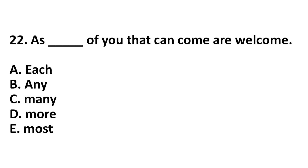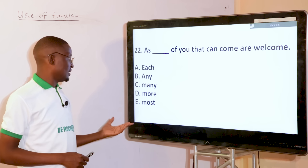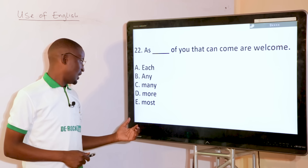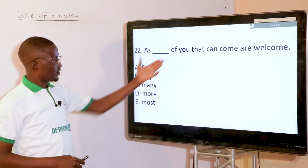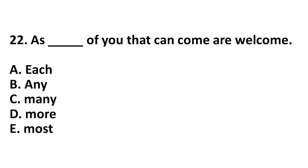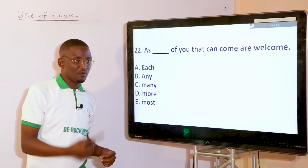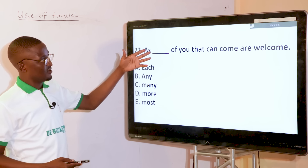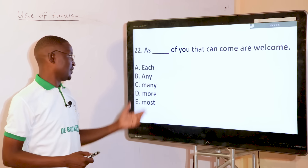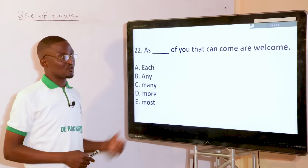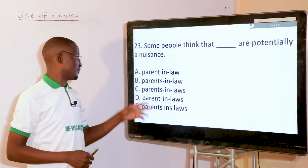Dash of you that can come are welcome. Options: as each, as any, as many, as more, as most. We are talking about a mass count of people, so the answer is as many — as many of you that can come are welcome — whatever number of people are involved.